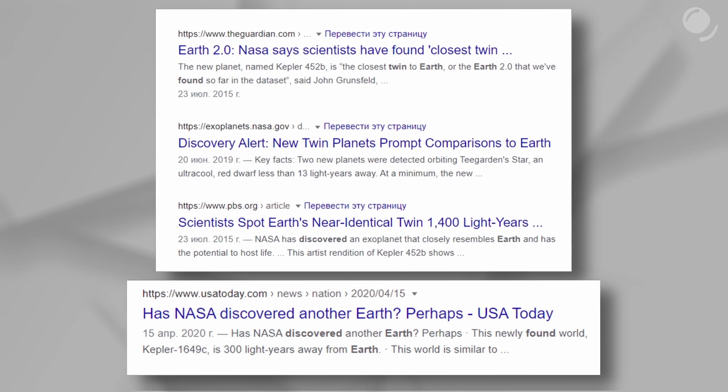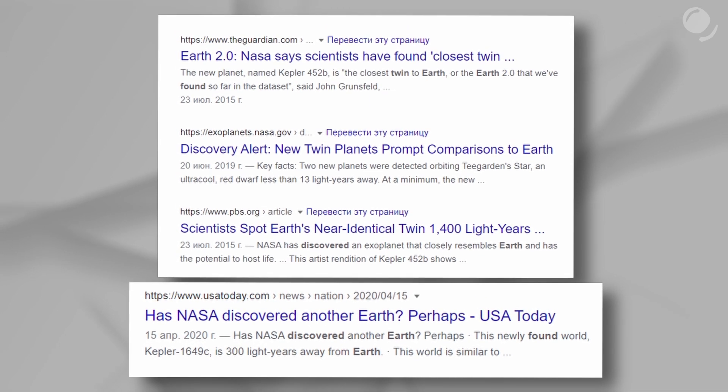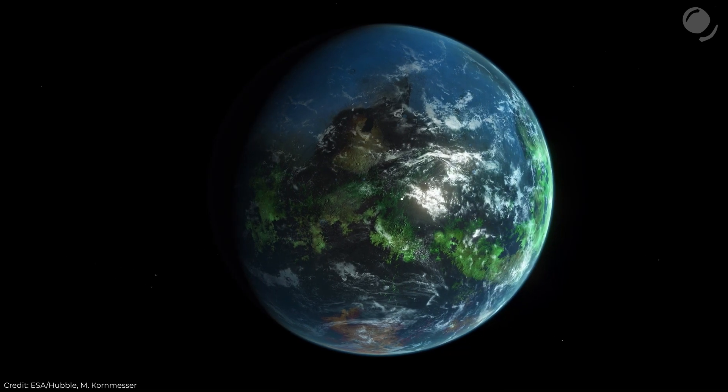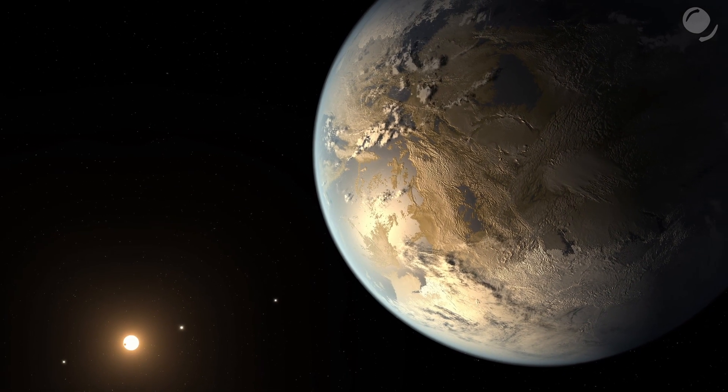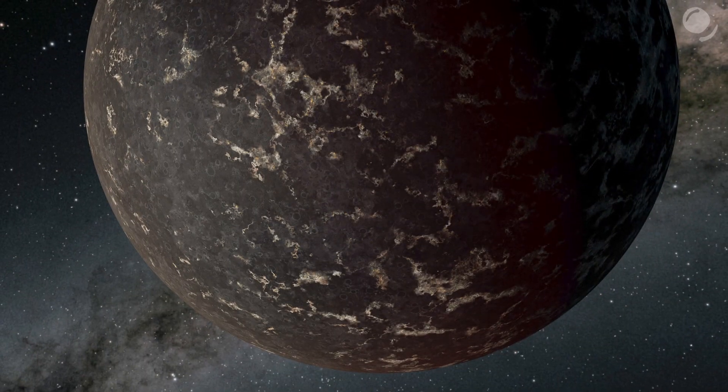When you see news about the discovery of the second Earth or Earth's twin, you might initially think of something like this, or at least something like this. But the planet scientists found may actually look, let's say, like this.